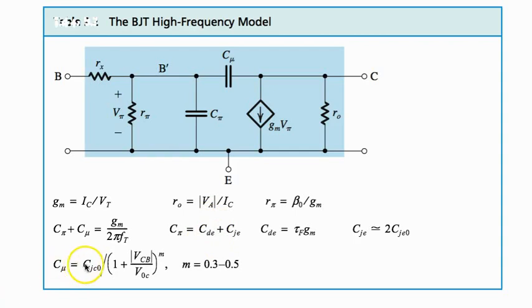C_mu is C_jc0 times 1 plus V_CB over V_c0 to the power m.